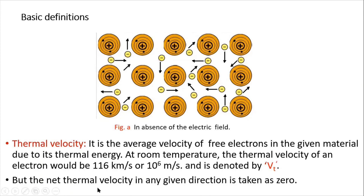Note: the net thermal velocity of the electrons in any given direction is taken as zero. The net velocity of the free electrons in any given direction is considered zero because if one electron is moving in the forward direction, there is exactly another electron moving in the backward direction. As a result, the net velocity of the electrons in any given direction is considered zero.